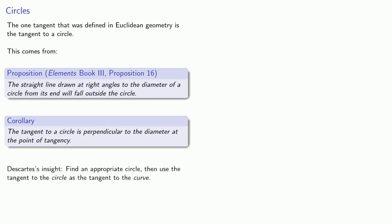And so Descartes had the following insight: find the appropriate circle, then use the tangent to the circle as the tangent to the curve. And that's a brilliant mathematical solution, because it turns one problem we can't solve into a different problem, which we still can't solve.